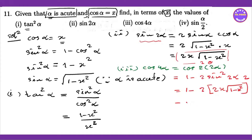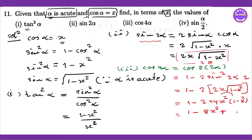So one minus two times (sine squared two alpha). Expanding: one minus two times (4x squared times (1 minus x squared)) equals one minus 8x squared plus 8x to the power of 4. So the result is 1 minus 8x squared plus 8x to the power 4.